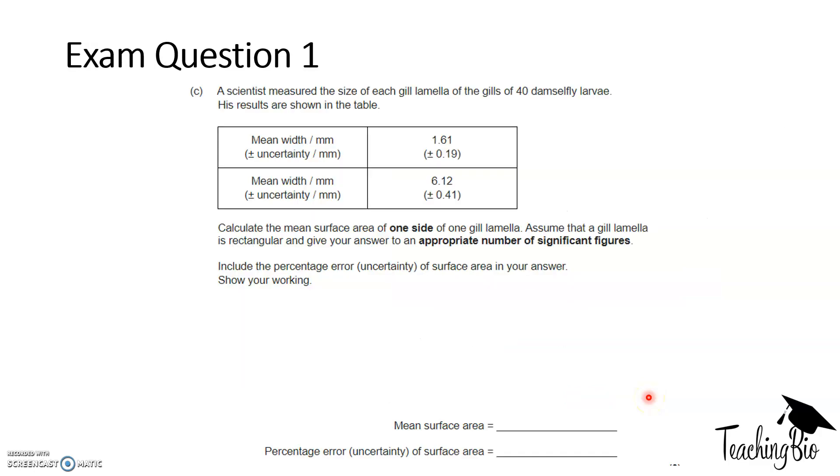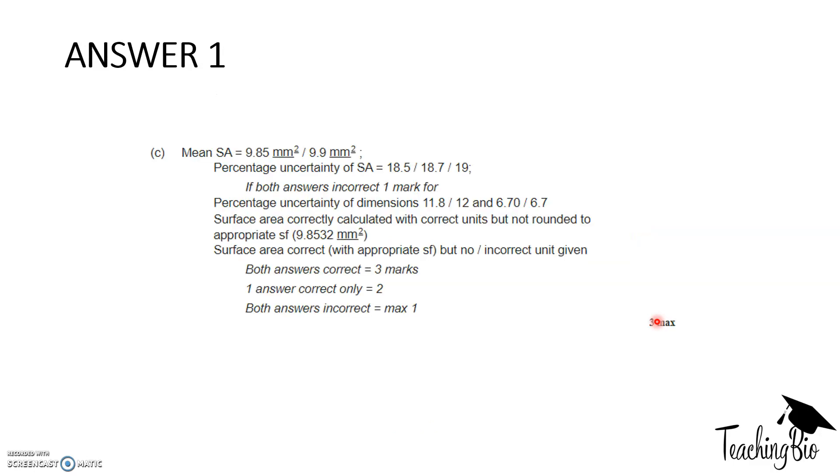So you can pause the video here and take a look at an actual exam question that they have used, where they've asked surface area and percentage uncertainty. So pause the video and have a go, and the answer will follow. Okay, and the answer is... The surface area was 9.85 mm squared, or 9.9. And the percentage uncertainties were 11.8, or 12, and 6.70, or 6.7, depending on the way you use the significant figures.